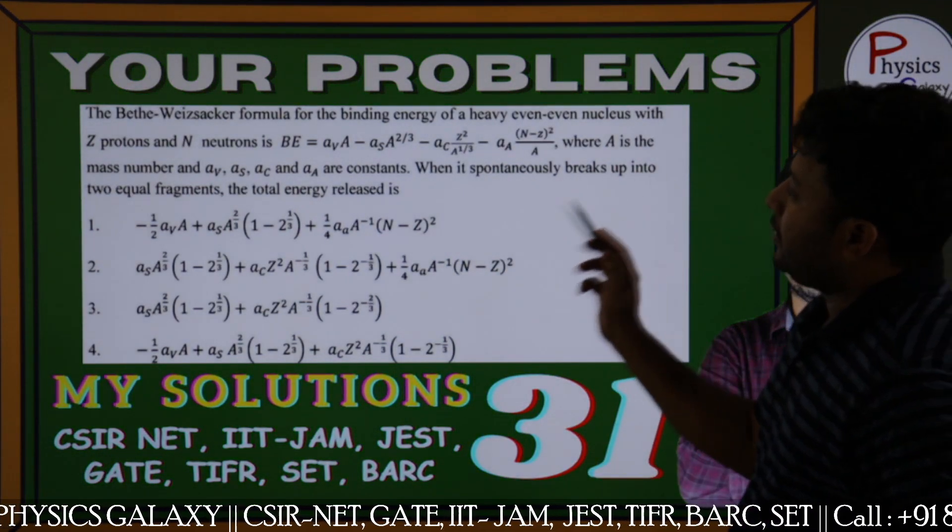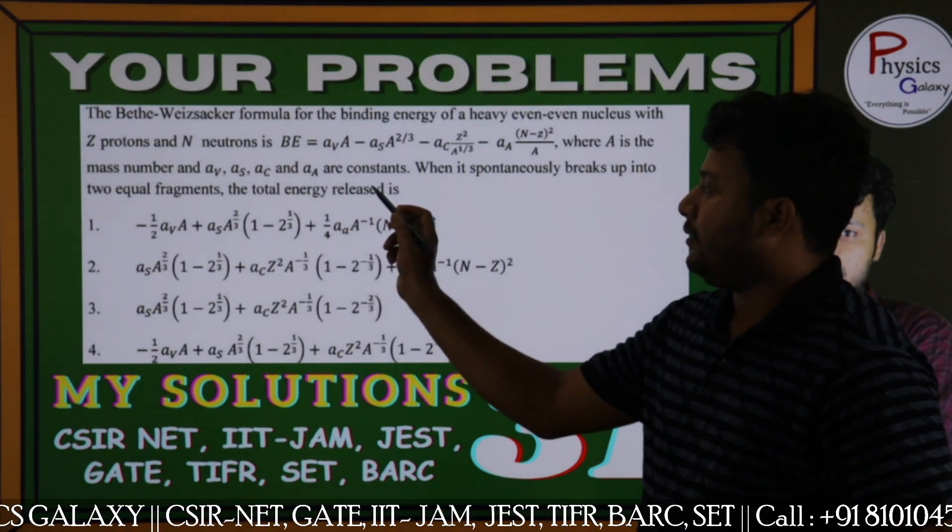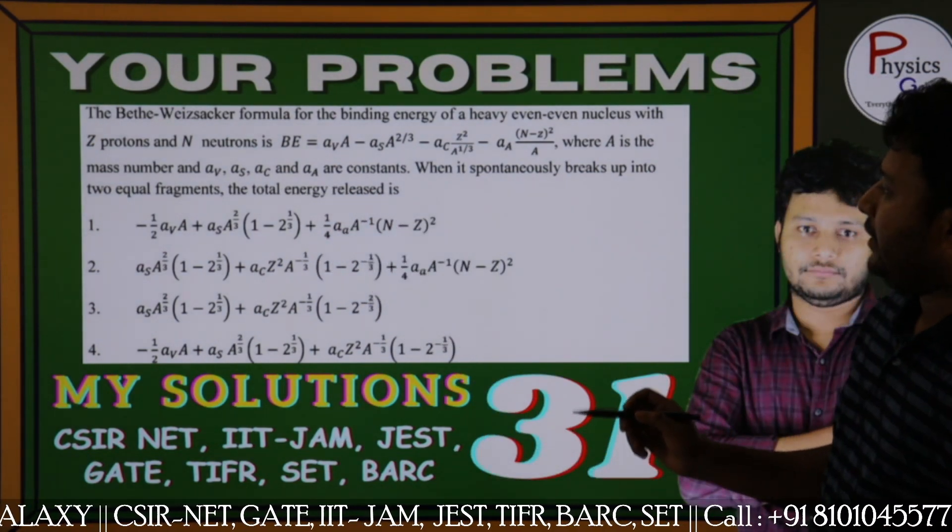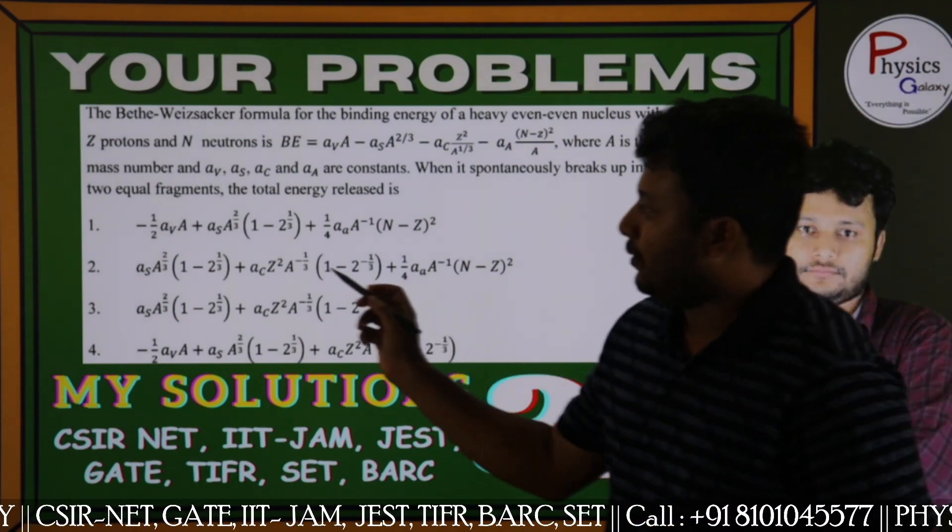A is the mass number. Av, As, Ac, and A are the constants. When it spontaneously breaks up into two equal fragments.